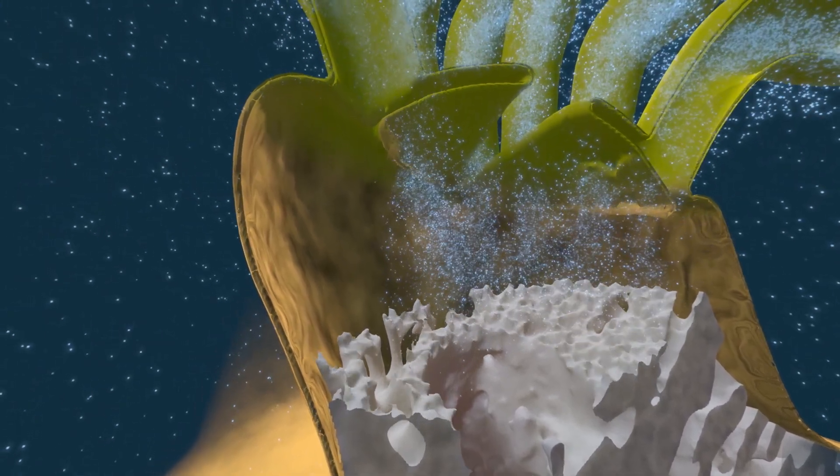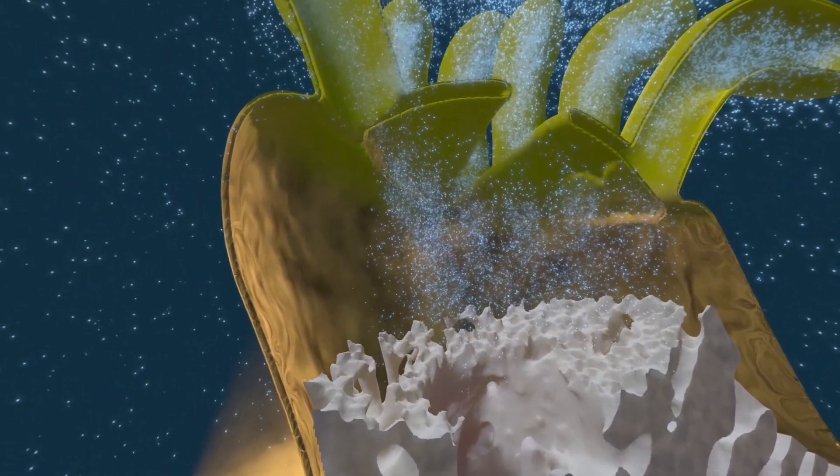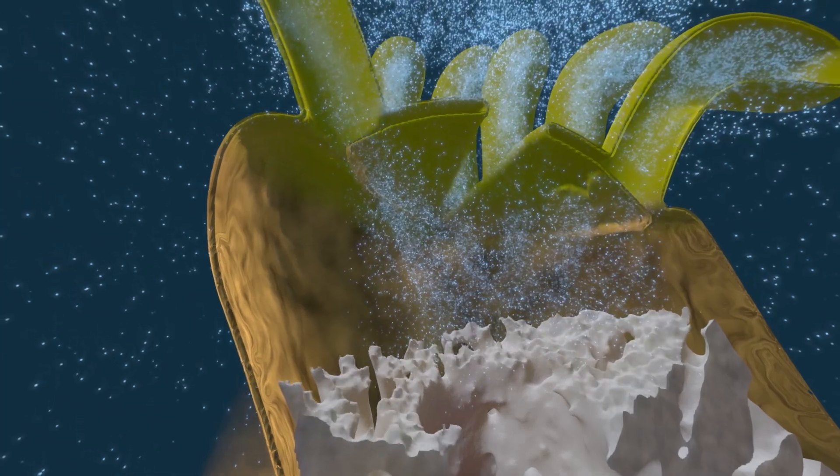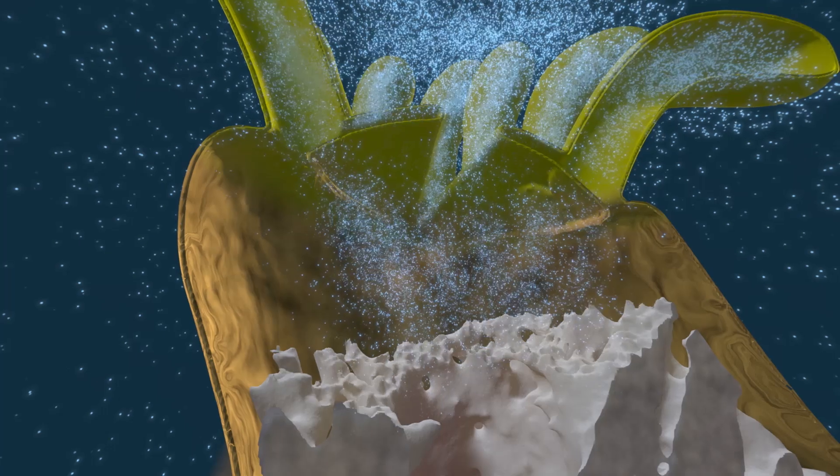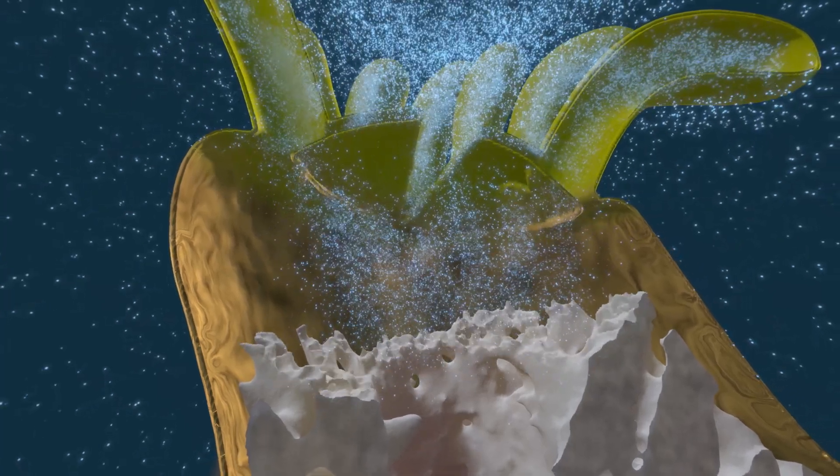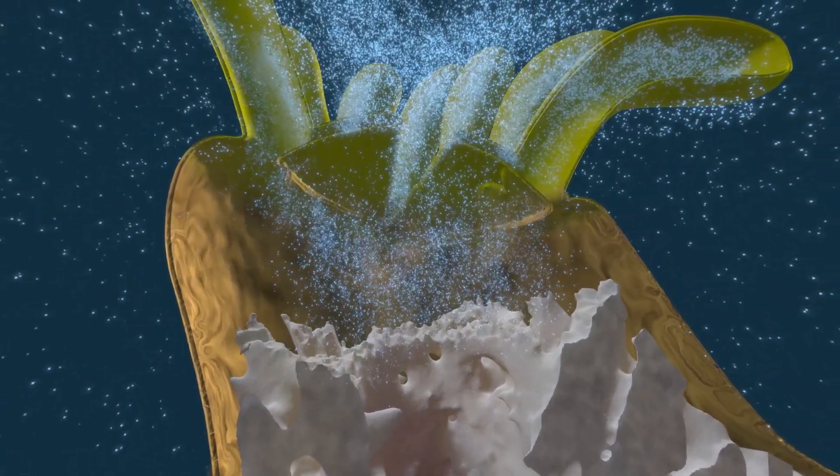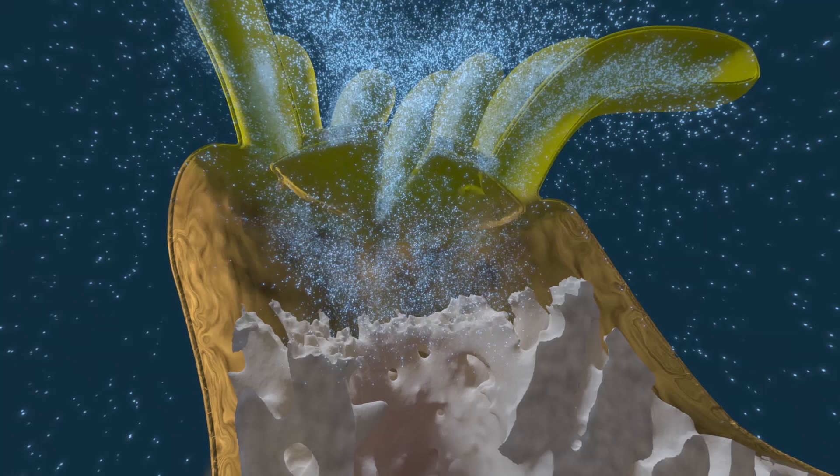When you breathe, you exhale carbon dioxide. All animals do, including corals. But their carbon dioxide combines with calcium from the ocean to create calcium carbonate. Corals use this chalky compound to build their skeletons.